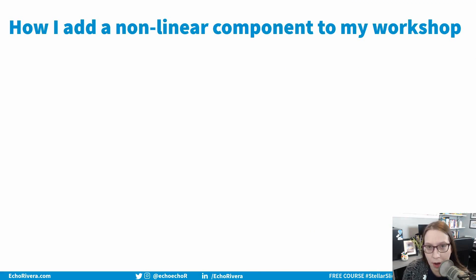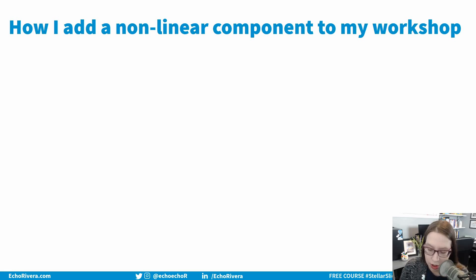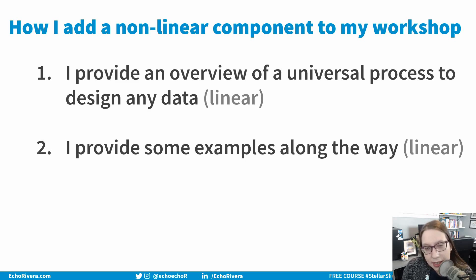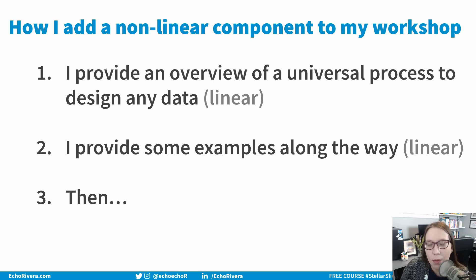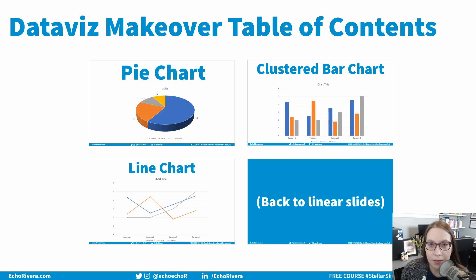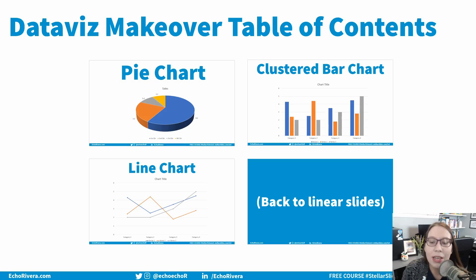I promised I would show you a real-life example of how I use non-linear presentation elements in my workshop. This is for my Presenting with Data Visualization workshop. In the first part, I provide an overview of a universal process to design any data visualization — that's linear. But when we're done with that, I bring participants to a clickable table of contents with about five to six different types of graphs or data visualizations, and I have them vote on which ones we cover, because there's usually not enough time to cover all of them. So I let them pick and choose to make sure we do the ones they're most interested in.